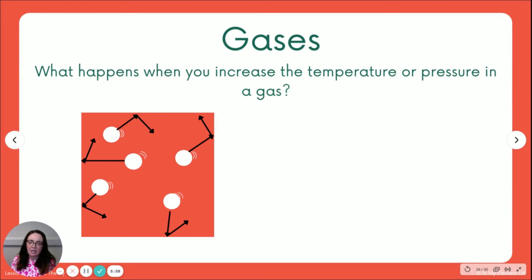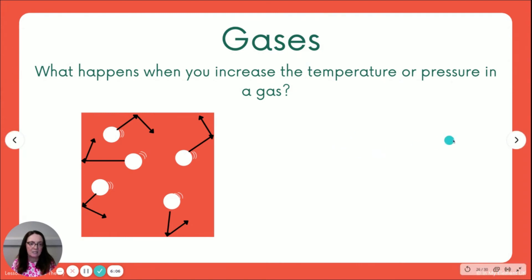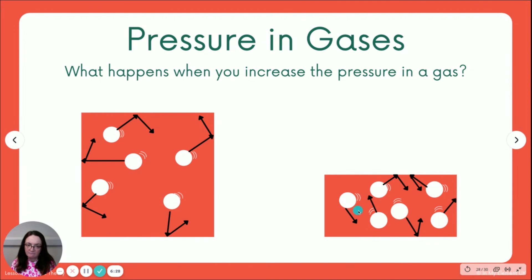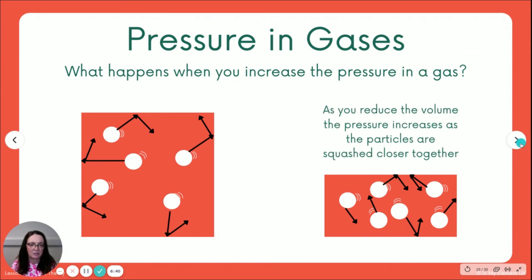A couple of bits on gases. You need to know what happens when you increase the temperature or pressure in a gas. When we increase the temperature within a gas, the particles will gain more energy — they'll collide with the container sides and they'll collide with one another more often. When we increase the pressure by making the container the gas is held in smaller, look at what happens to those particles. If you reduce the volume — we've halved it here — the pressure is increasing because the particles are squashed closer together.